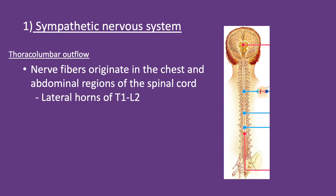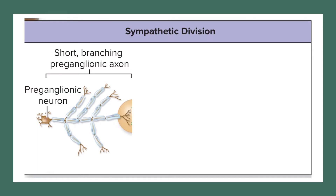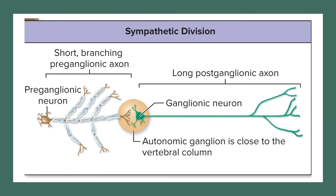The sympathetic nervous system has thoracolumbar outflow — nerve fibers originate in the chest and abdominal regions of the spinal cord. Specifically, preganglionic cell bodies are within the lateral horns of T1 through L2 vertebrae. Anatomically, sympathetic fibers feature a short, highly branched preganglionic fiber (on average greater than 20 branches) followed by a long postganglionic fiber, with the autonomic ganglion lying close to the vertebral column.